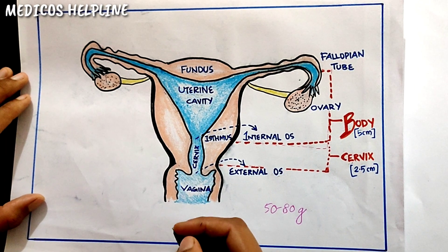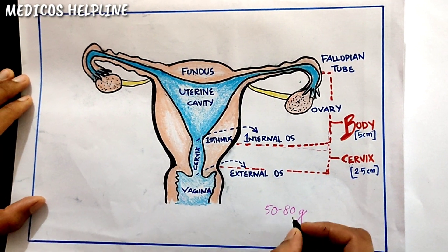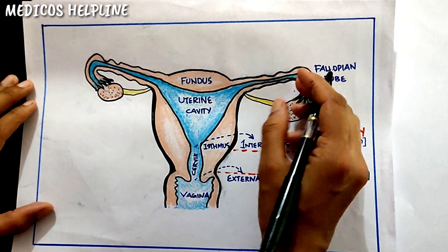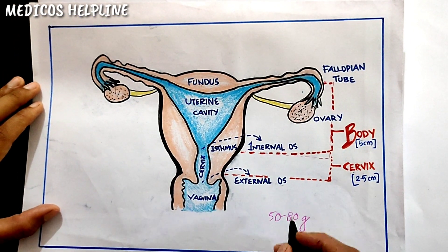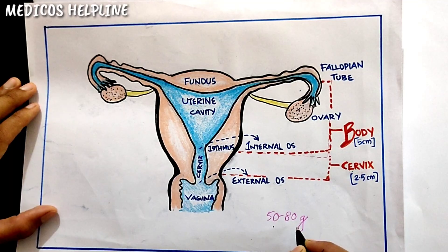The uterus is very small, with a total length of 7.5 centimeters and a total weight averaging from 50 to 80 grams.